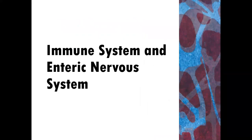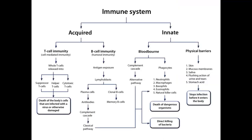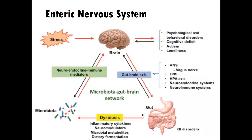We'll then learn about the immune system and the enteric nervous system. We're going to spend time on the acquired and the innate immune system, as it's important to have this broad-based knowledge before we move into the specifics about the microbiota gut-brain axis. The enteric nervous system section will look at the relationship between the gut, the gastrointestinal system, and the brain, and the impact of stress on those systems.